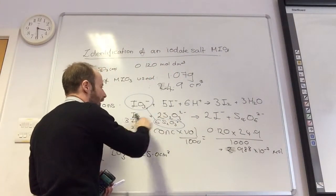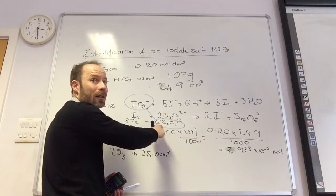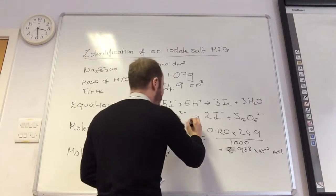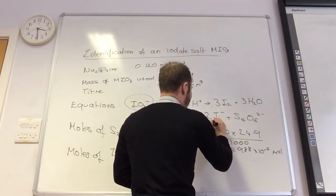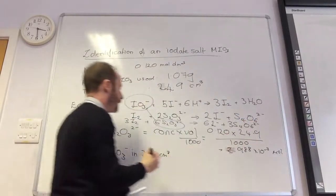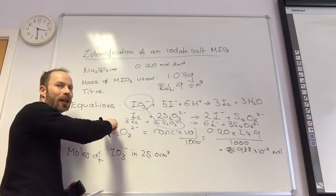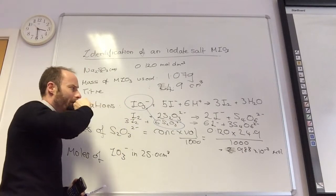I times this whole equation by three. That gives me this as being 6 I- plus 3 S4O6 2-. So I times this entire equation because then I can relate these two equations together. So I'm going to divide it by six.